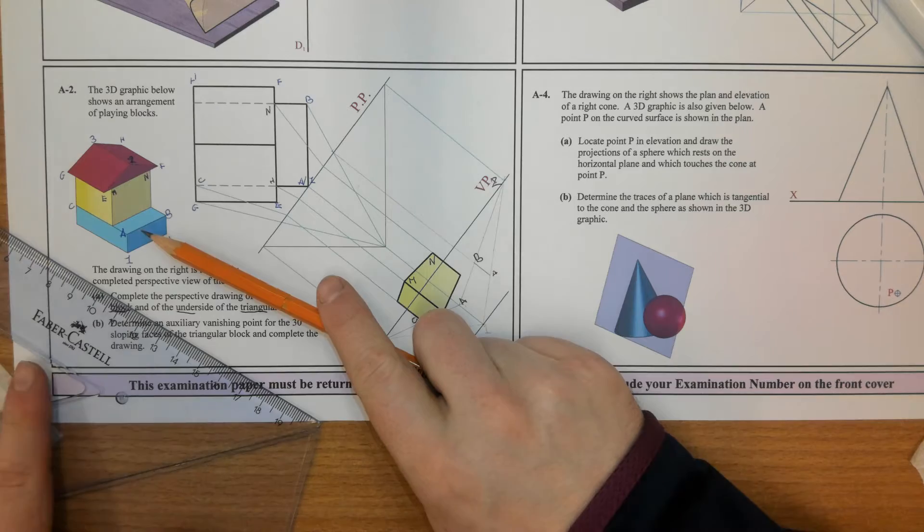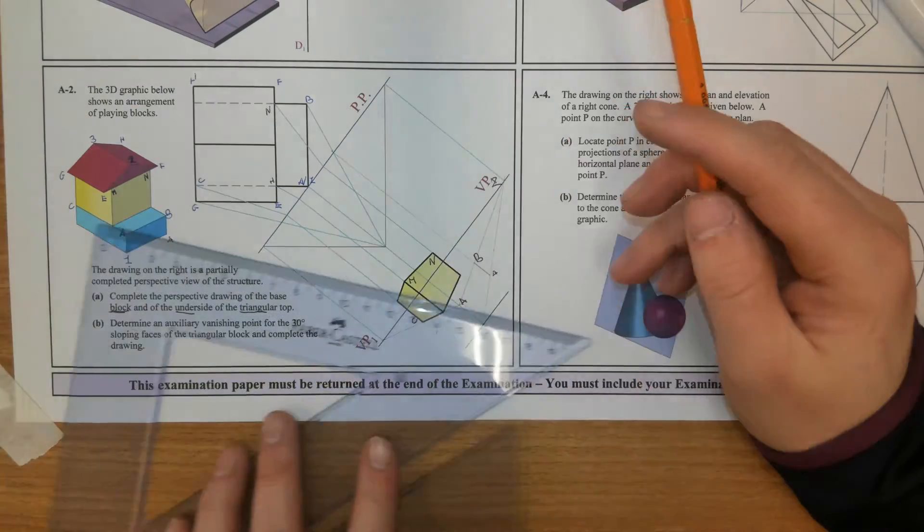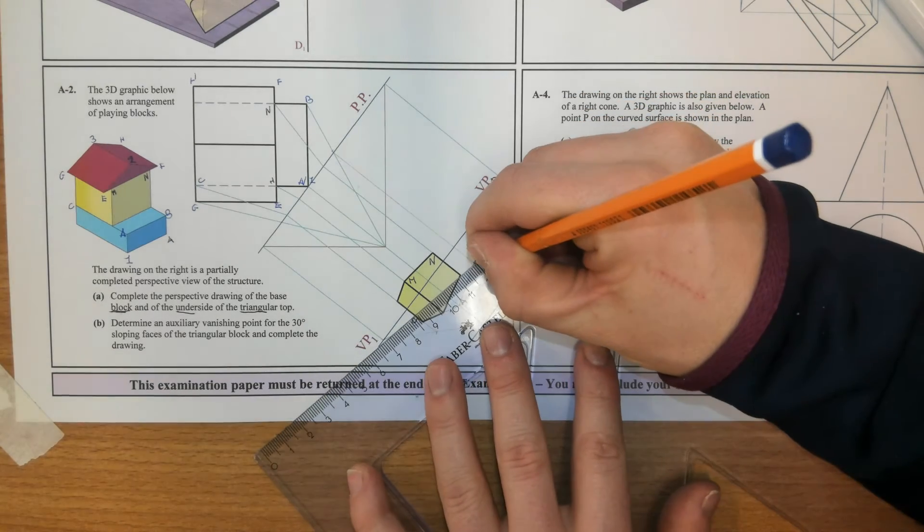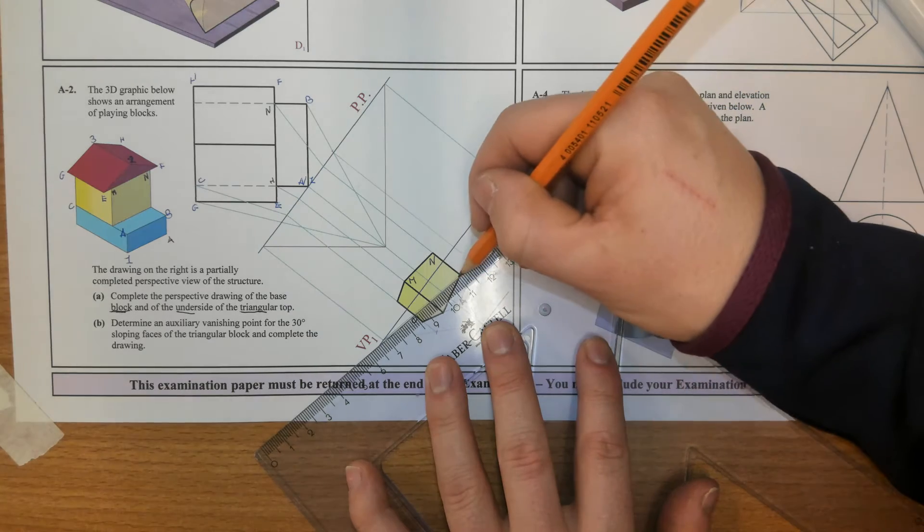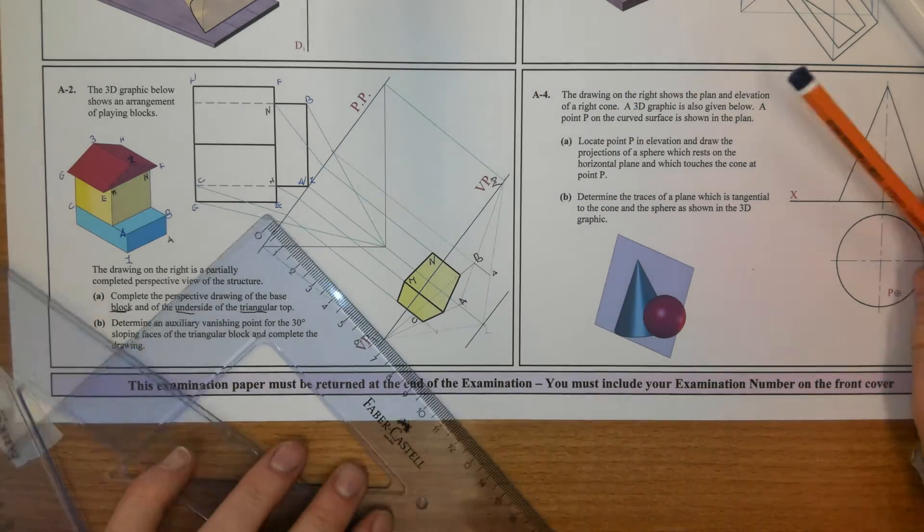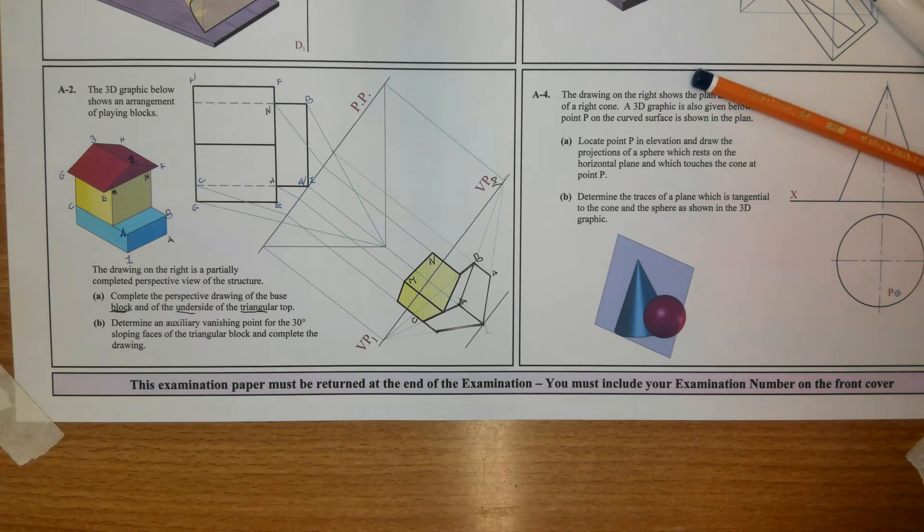Now this line goes off to VP1. So this line here goes off to VP1. So I'm going to join this to VP1. I'm going to heavy that in there. Now I'm going to just pause and darken all those lines. Now there's the lines going in.